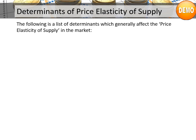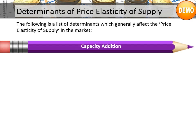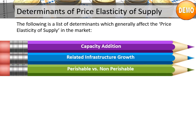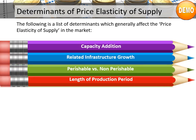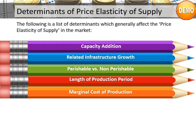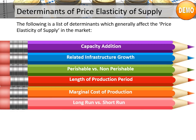Determinants of Price Elasticity of Supply: The following is a list of determinants which generally affect the price elasticity of supply in the market: Capacity addition, related infrastructure growth, perishable versus non-perishable goods, length of production period, marginal cost of production, and long run versus short run. Let's look at each in detail.